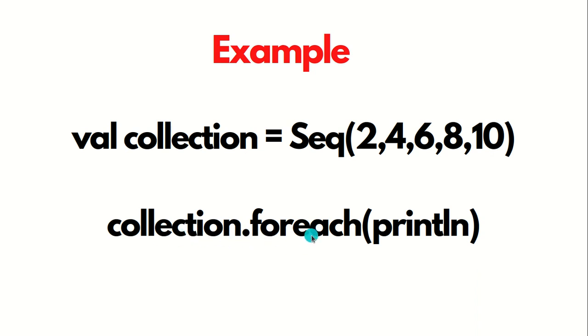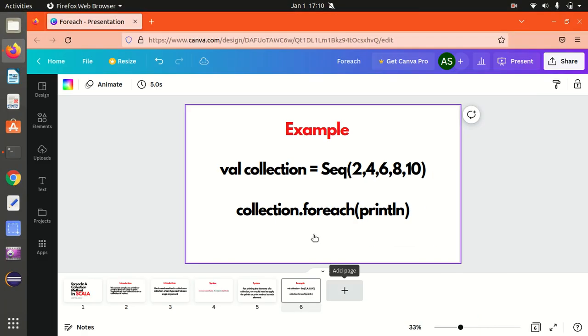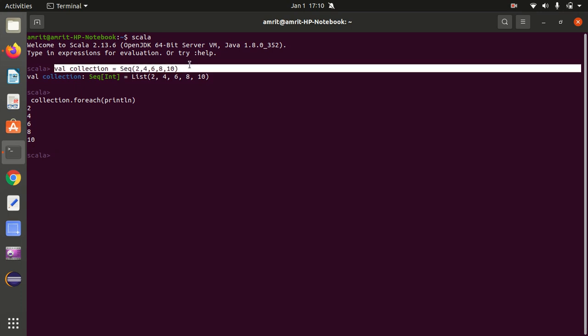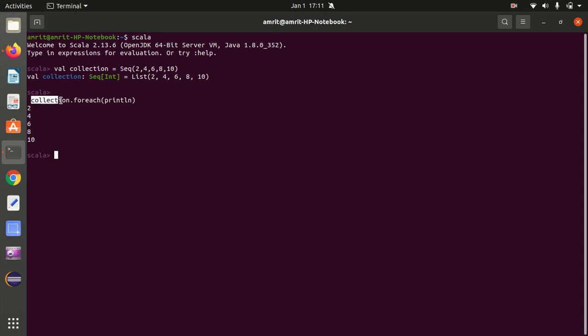Let's see this in action in Scala. So I've already opened up Scala here, check it out. I've already set up a collection of integers sequence, and then I'm just using collection.foreach(println) and I'm getting the answer 2, 4, 6, 8, 10 in new lines.